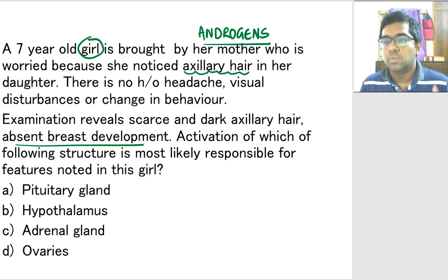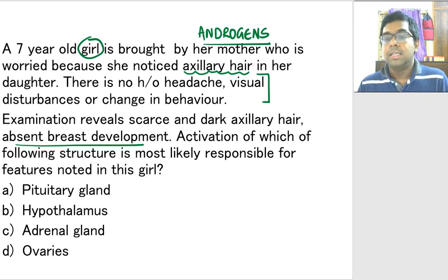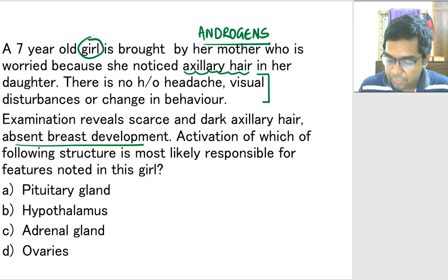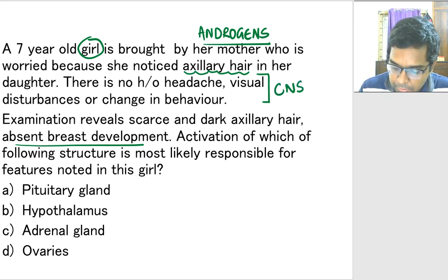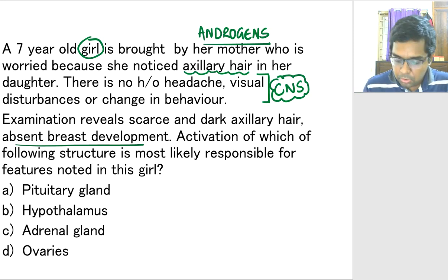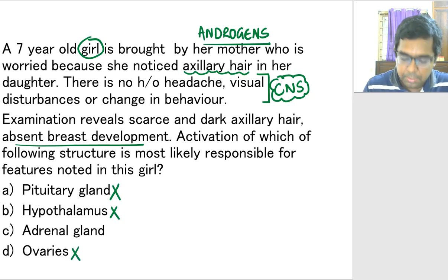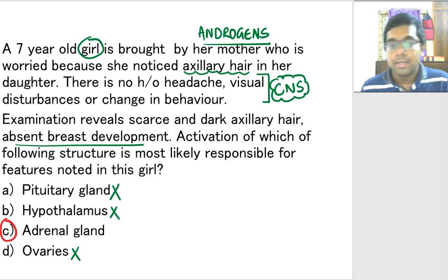Development of axillary hair is one of the changes occurring during puberty. But you should remember that this is a girl child, and in a girl, puberty is first marked by development or enlargement of the breast. Here it is very clearly mentioned that there is absent breast development. So this has nothing to do with actual puberty — it is production of androgens from the adrenal gland. There is no history of headache or visual disturbances, so there is no central nervous system problem. That tells you that pituitary, hypothalamus, and ovary are all out of question. The only answer remaining is adrenal gland.